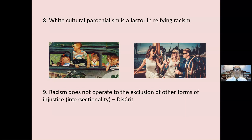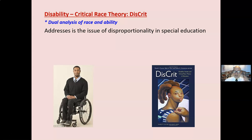The ninth idea is that racism doesn't operate to the exclusion of other forms of injustice — this intersectionality of race and disability and other forms of marginalized populations. That brings us to DisCrit: the analysis of race and disability where disability and critical race theory intersect. It also addresses the issue of disproportionality in special education. People of color are overrepresented in special education, and there are forces that make that so.